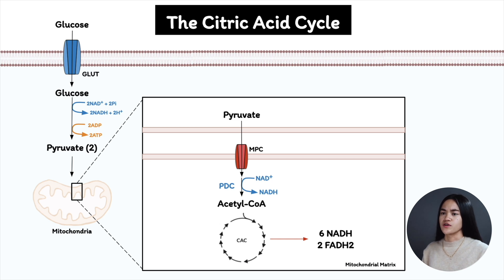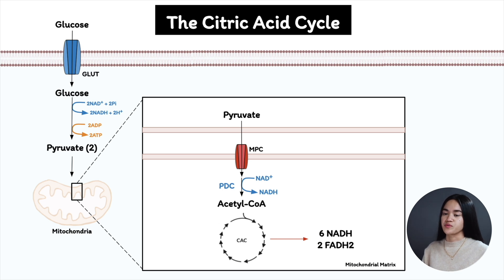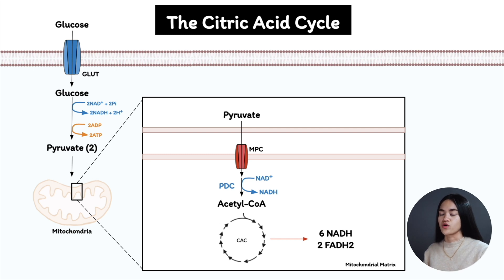The cycle occurs in the mitochondrial matrix, and our goal is to release energy by oxidizing acetyl-CoA to carbon dioxide and water. The cycle also captures energy by electron transfer to NADH and FADH₂, which are important electron carriers and a major product of the cycle. These electron carriers donate their electrons to the respiratory chain, ultimately generating a large amount of ATP during oxidative phosphorylation.